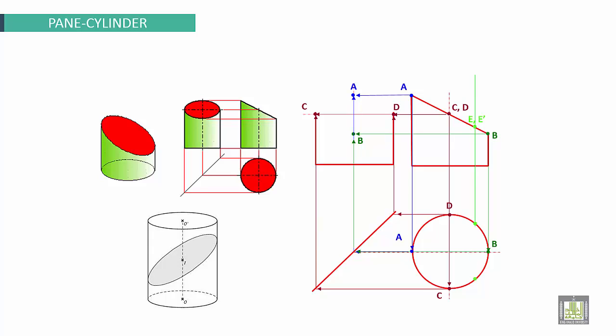E and E dash, two points. Projected by using the meter lines. This is point E and this is point E dash.